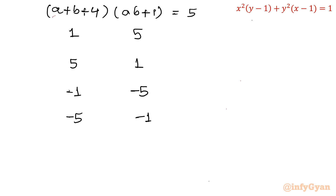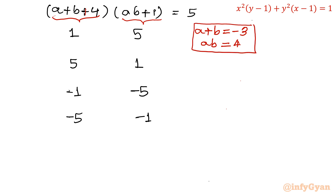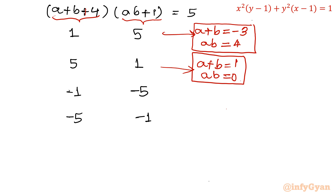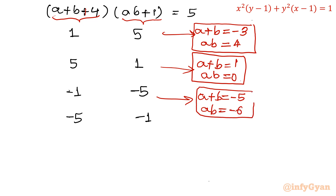Let me frame the four systems of equations. Case 1: a + b + 4 = 1 → a + b = −3, and ab + 1 = 5 → ab = 4. Case 2: a + b + 4 = 5 → a + b = 1, and ab + 1 = 1 → ab = 0. Case 3: a + b + 4 = −1 → a + b = −5, and ab + 1 = −5 → ab = −6. Case 4: a + b + 4 = −5 → a + b = −9, and ab + 1 = −1 → ab = −2.